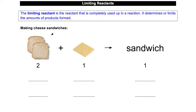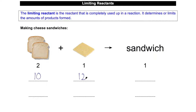Let's say you are making cheese sandwiches. Looking at the equation here, for every sandwich I need two slices of bread and one slice of cheese to make one sandwich. So it's in the ratio 2:1:1. Let's say I give you ten slices of bread and twelve slices of cheese — can you tell me how many sandwiches I can make?